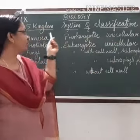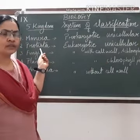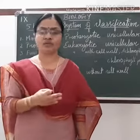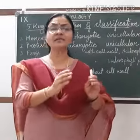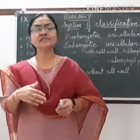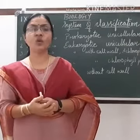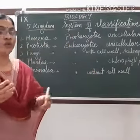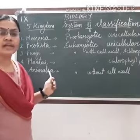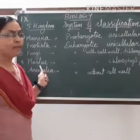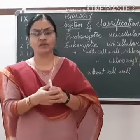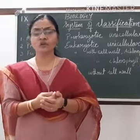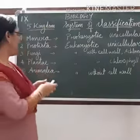So unicellular prokaryotic organisms are put under Monera, and unicellular eukaryotic organisms under Protista. The next criterion for classifying living organisms was whether the organism possessed a cell wall or not. Organisms which have a cell wall we call plants (Plantae), and organisms which do not possess a cell wall we call animals. Plants which had a cell wall but did not have chlorophyll were grouped separately and called Fungi.